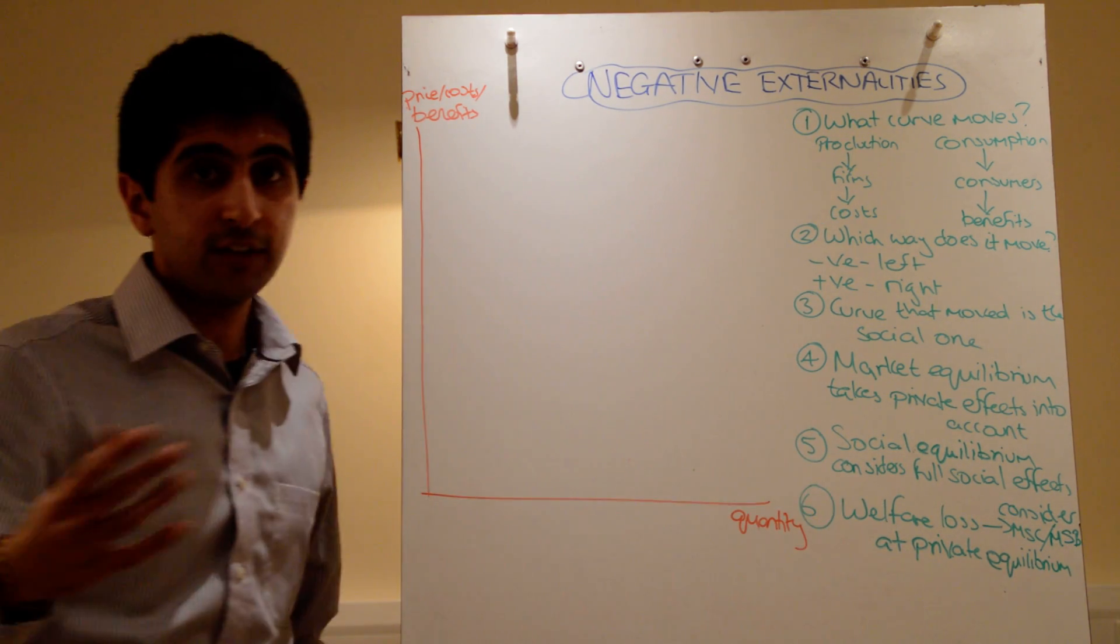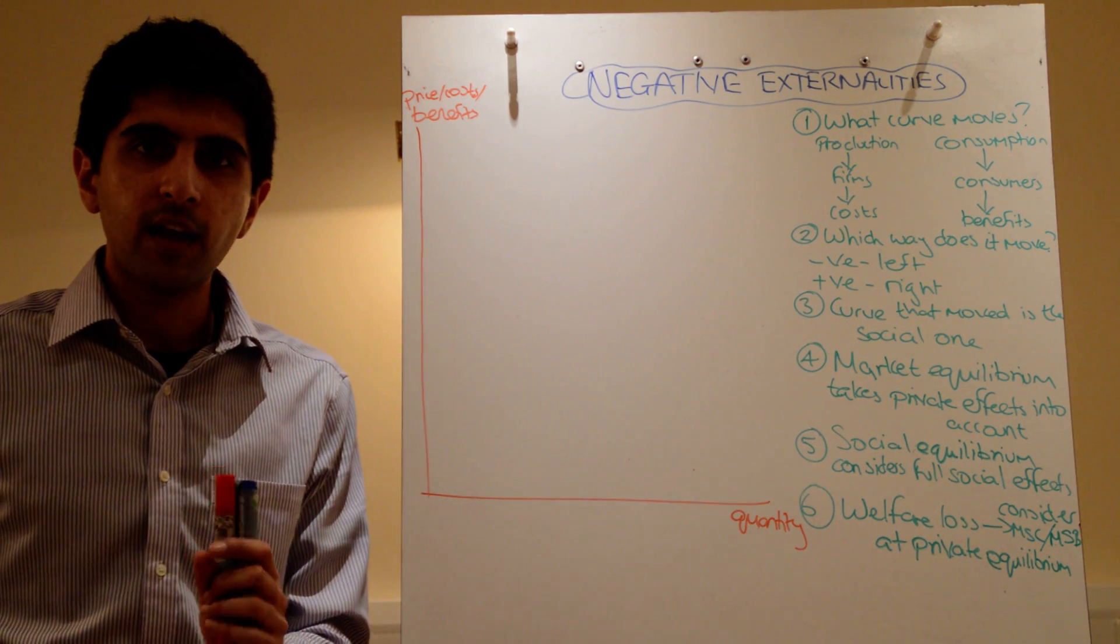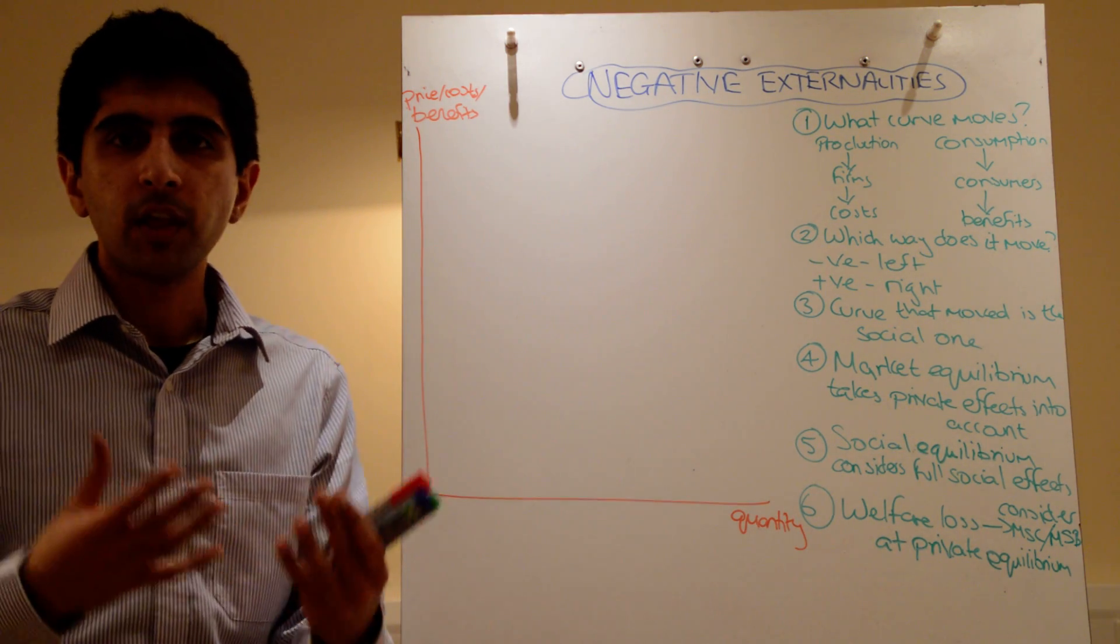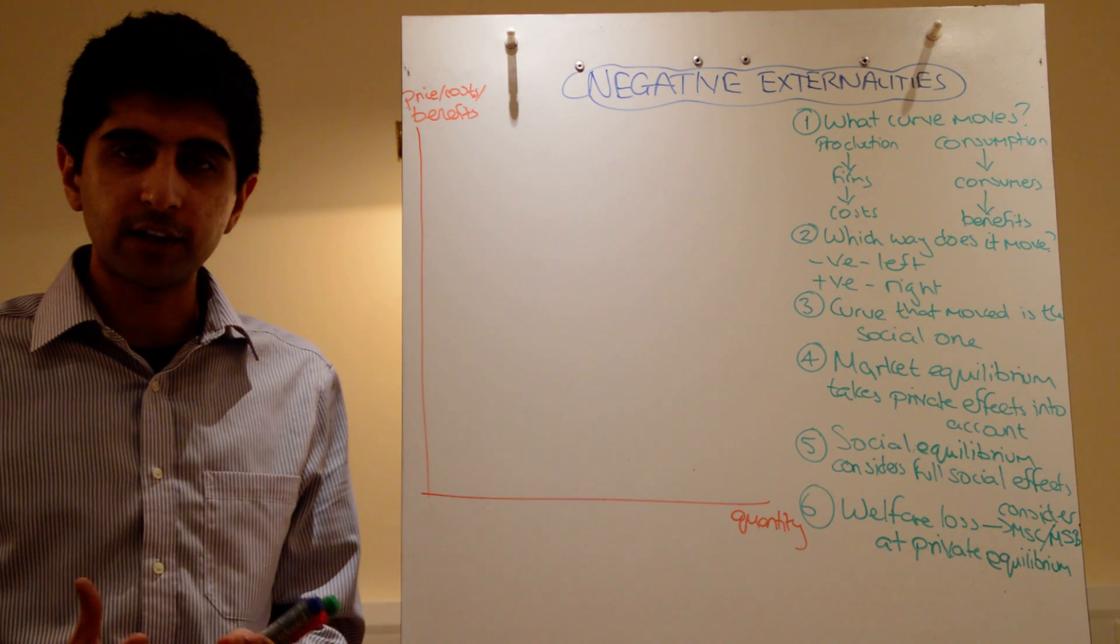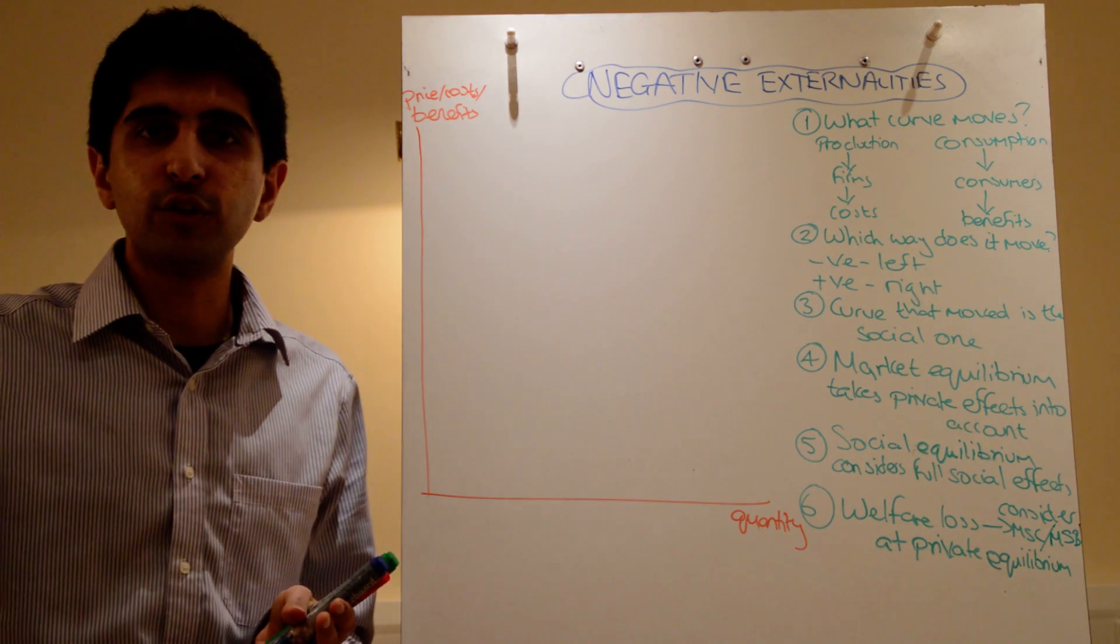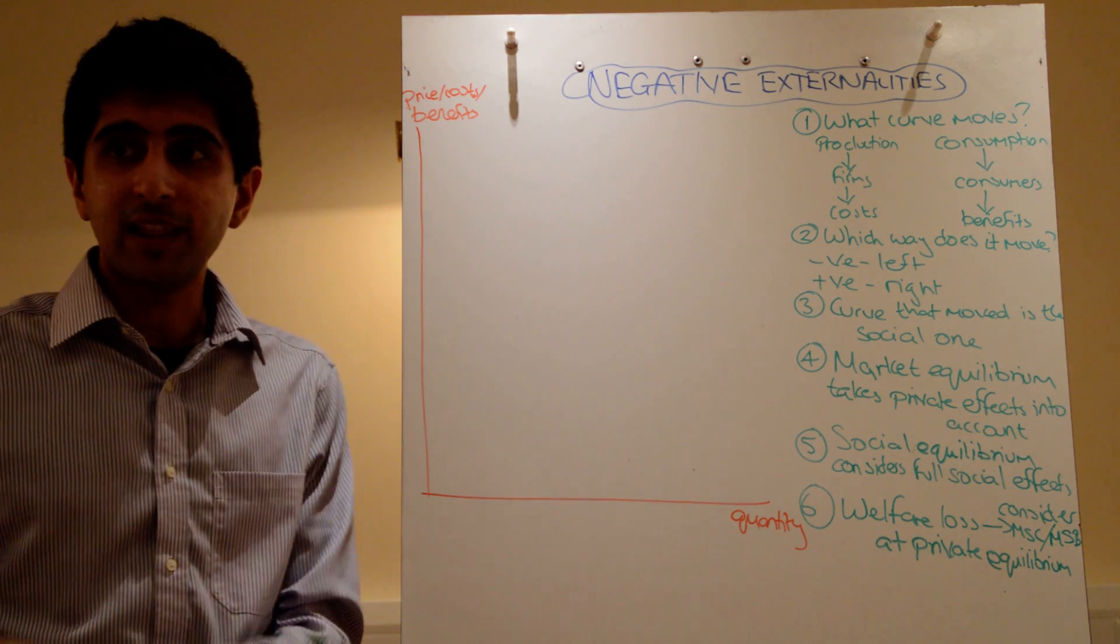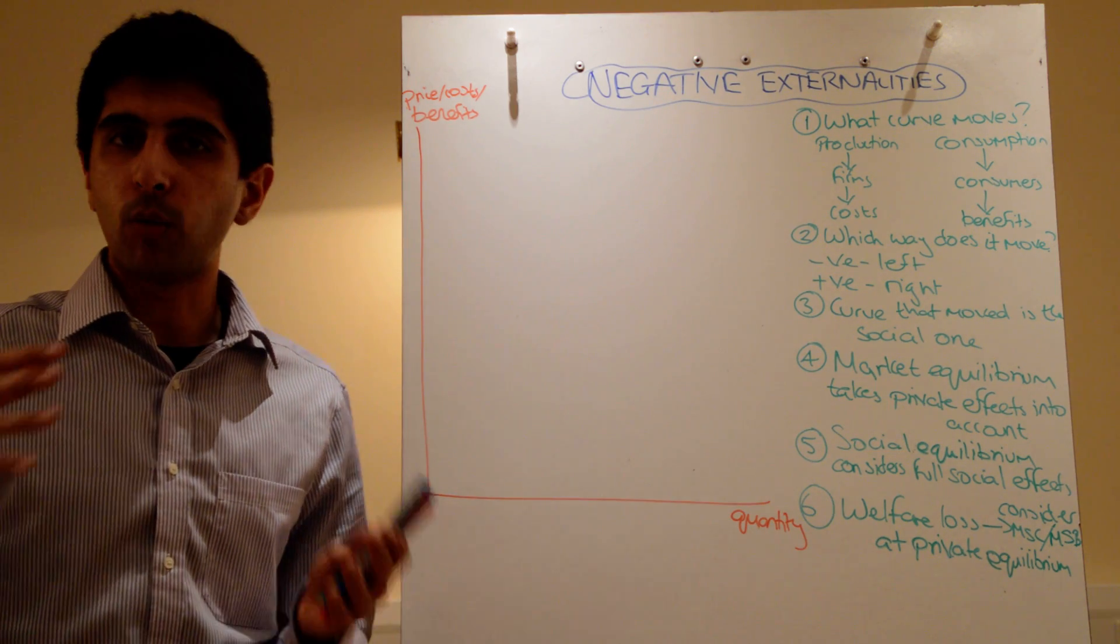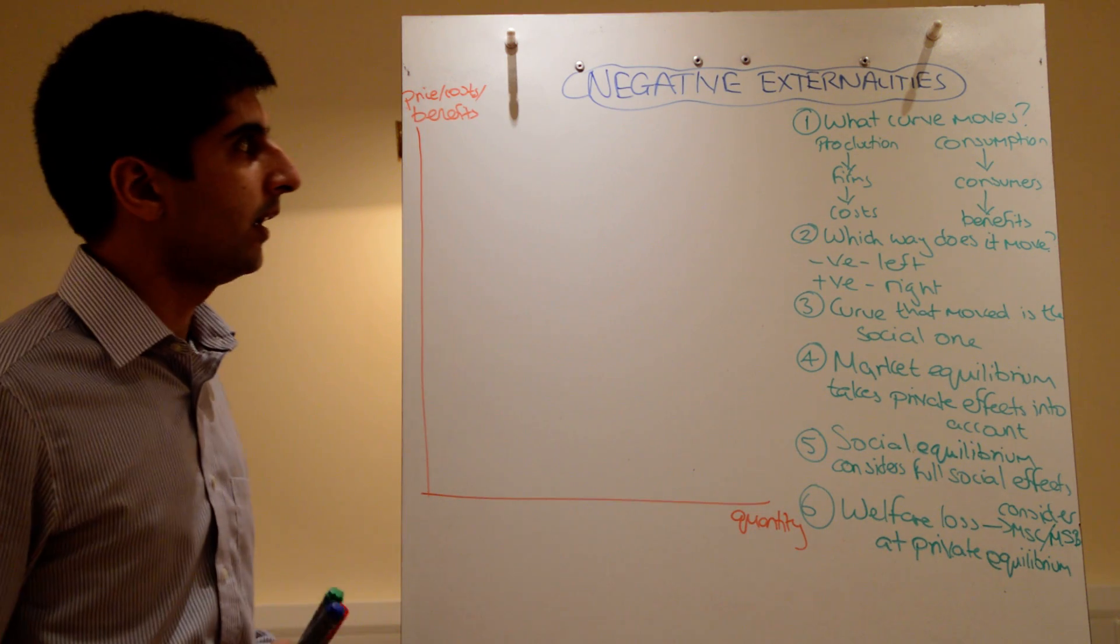Negative externalities, you need to know this as well. Negative externalities are detrimental third party effects as a result of the actions from a separate agent. So when someone consumes something or produces something, so engages in an economic transaction, the effect of doing that harms a third party. Somebody else not involved in that transaction is harmed. So there's an impact on welfare, an impact on society as a result.